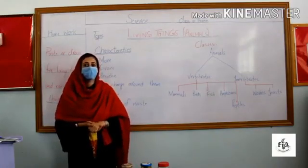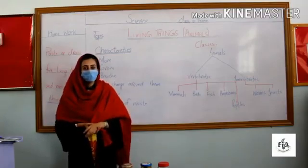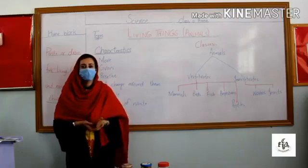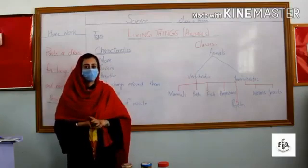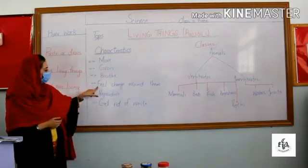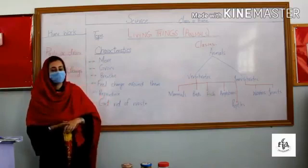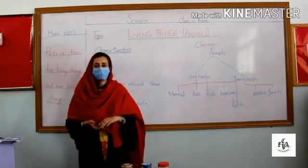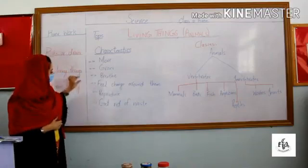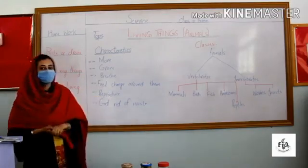Number three: living things breathe. Living things breathe using different body organs or parts. Human beings and animals breathe with their lungs. Plants take in carbon dioxide from the air. Fish in the water breathe with their gills. Next, living things feel changes around them — they can feel everything which is happening around them.